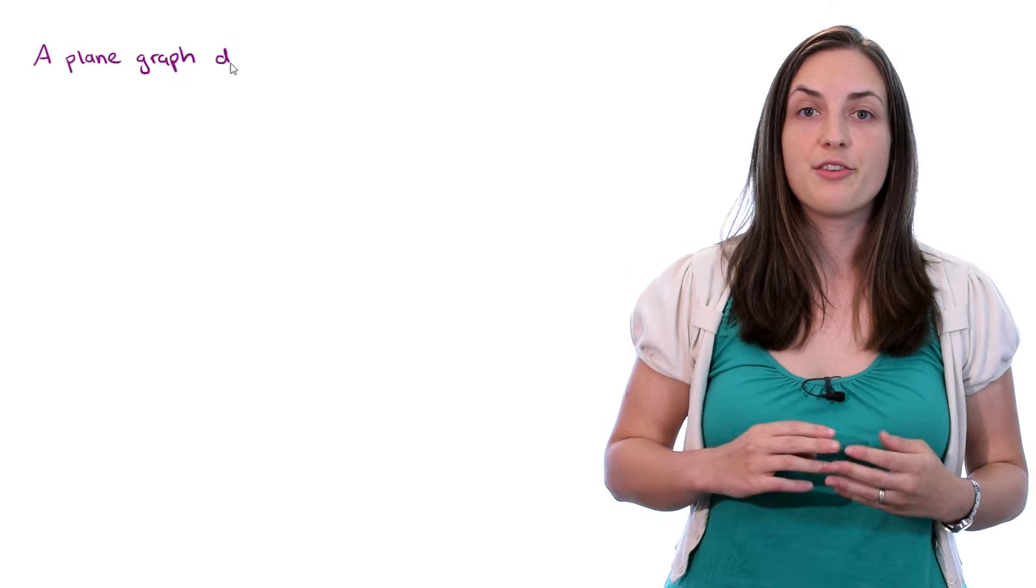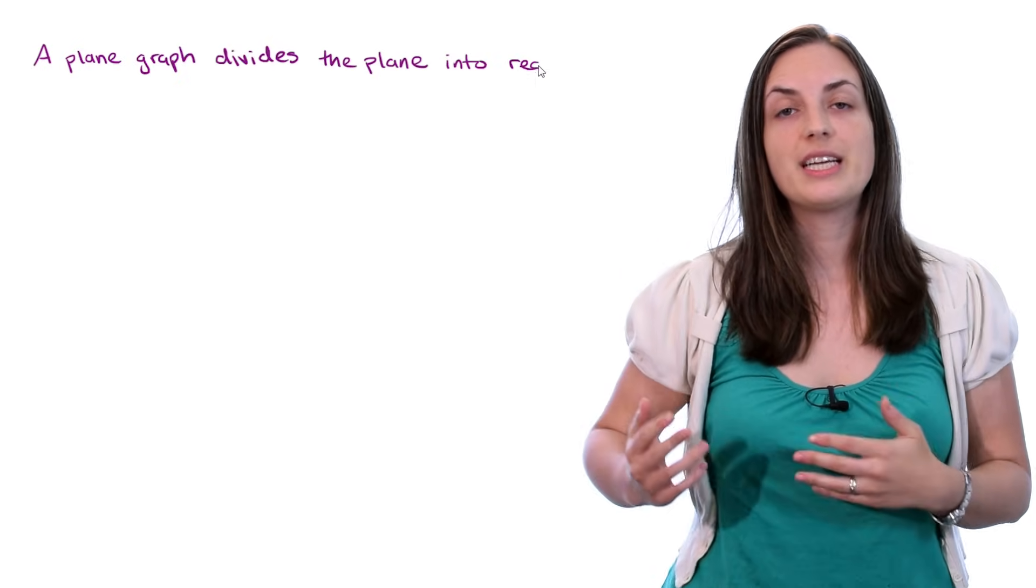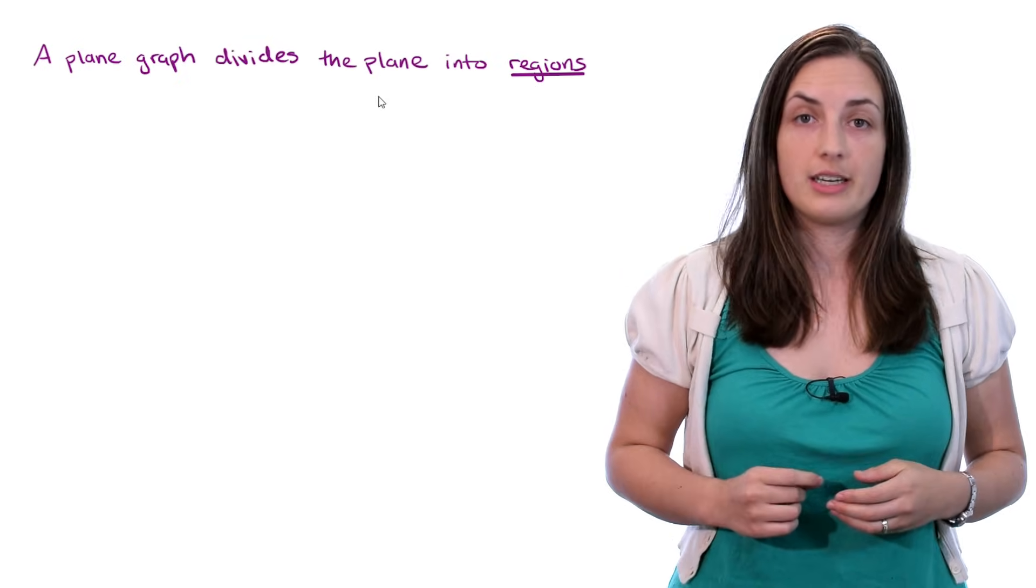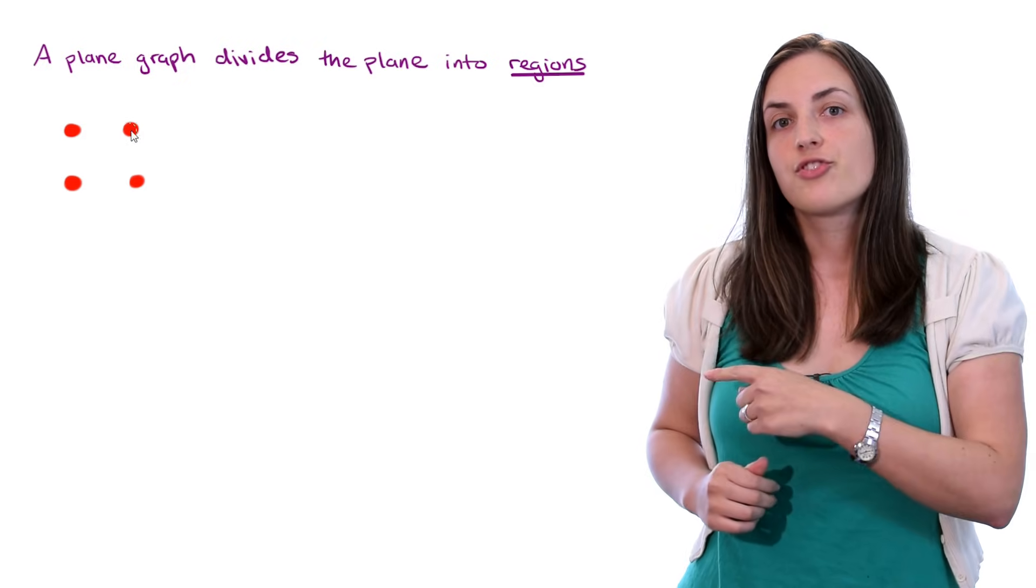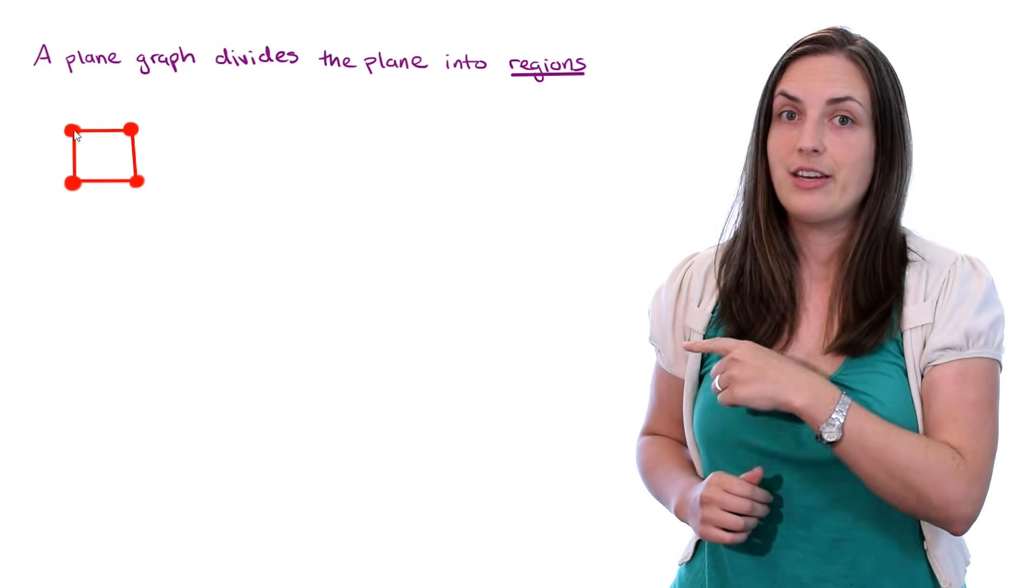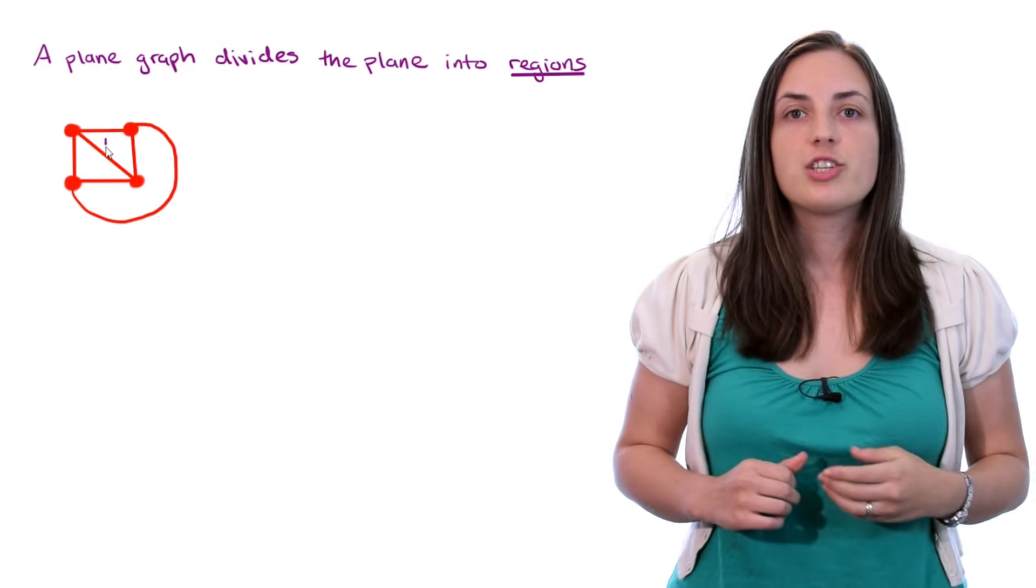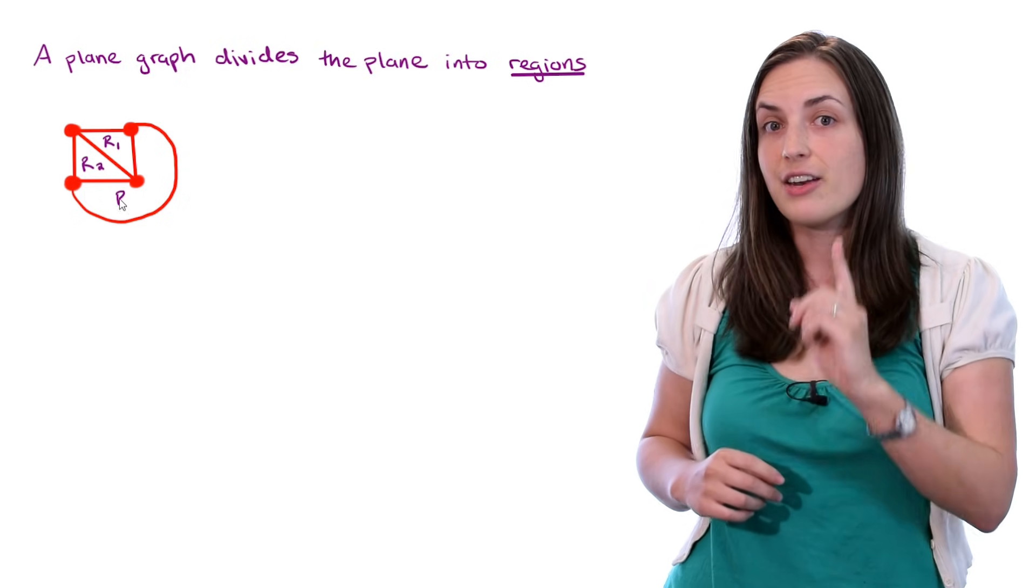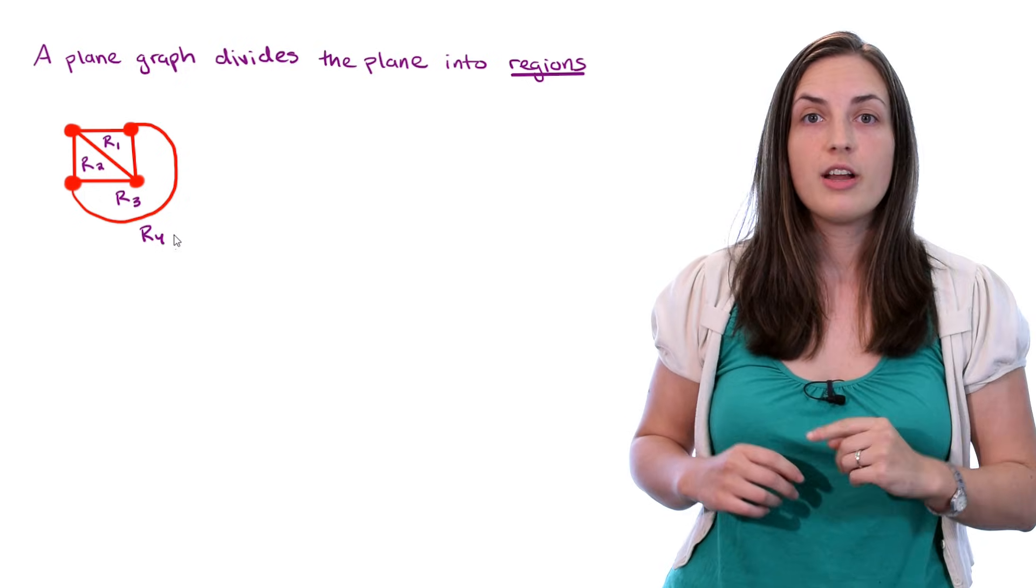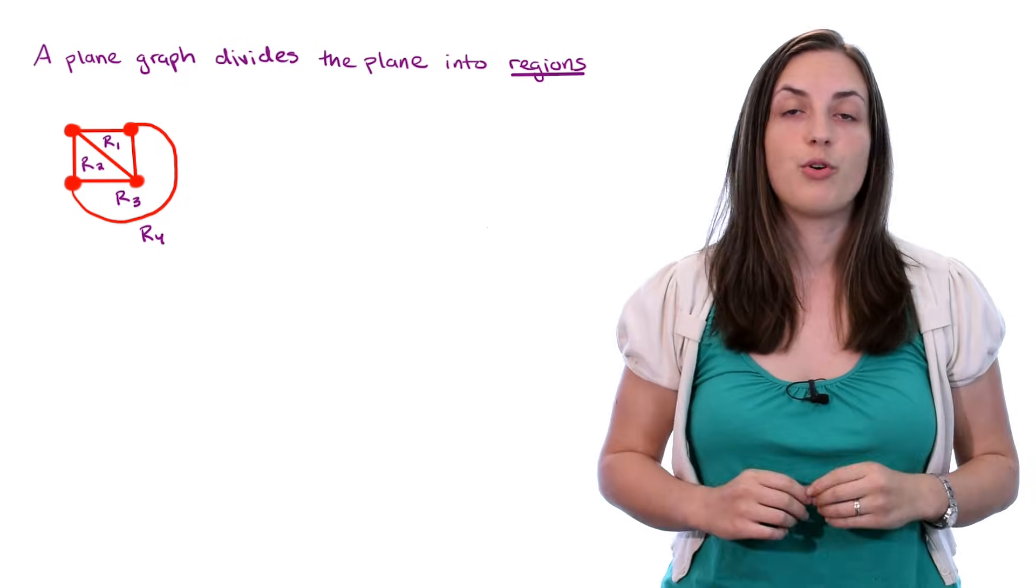Now a plane graph can divide the plane into regions. So let's take a look at our example again. We have the drawing of K4 which is a plane drawing. And we can label our regions, r1, r2, r3, and don't forget r4, the region that goes outside of the whole graph.